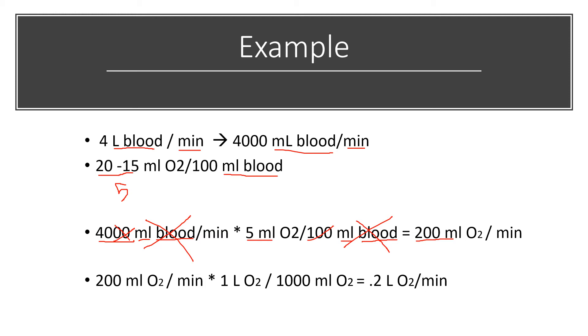Another thing we can do is with this 200 milliliters of O2 per minute, we can multiply it by 1 liter of oxygen divided by 100 milliliters of O2. That can give us the answer in terms of liters.